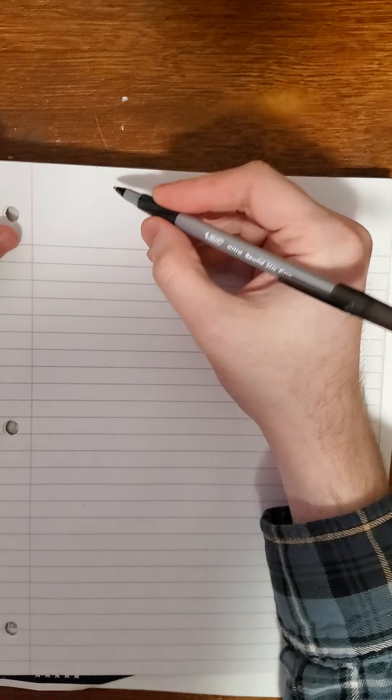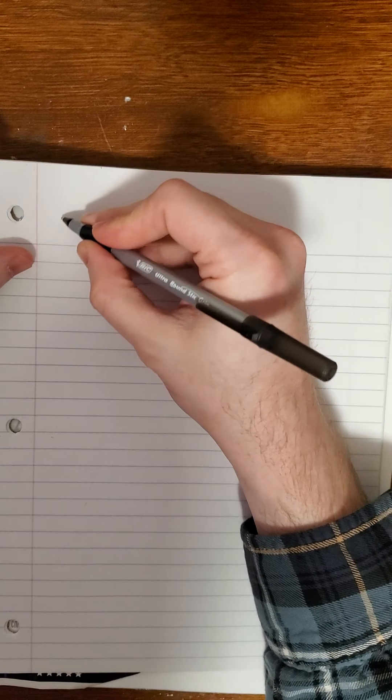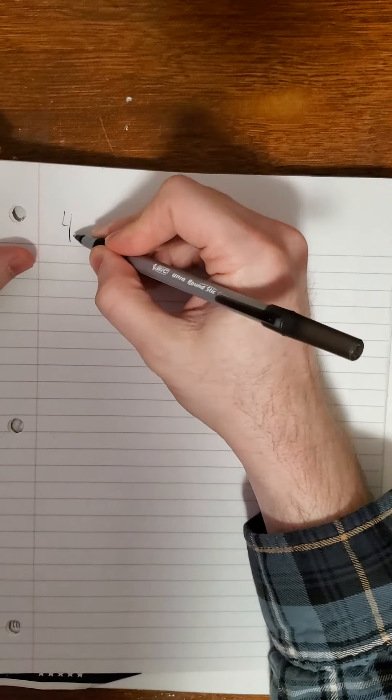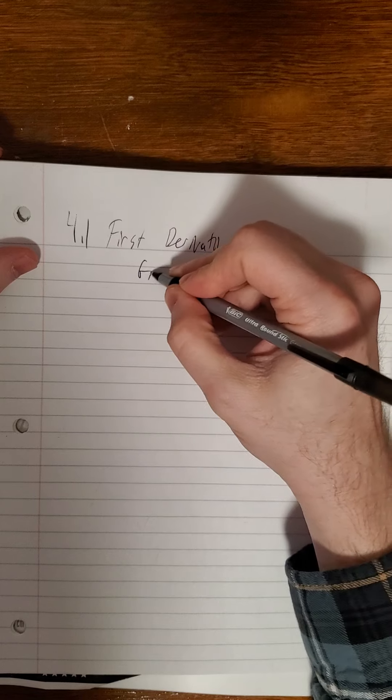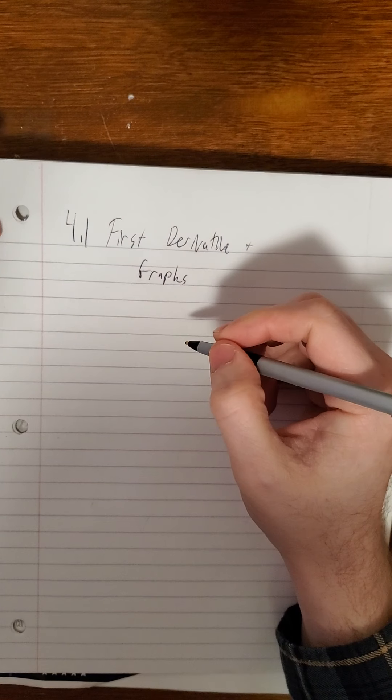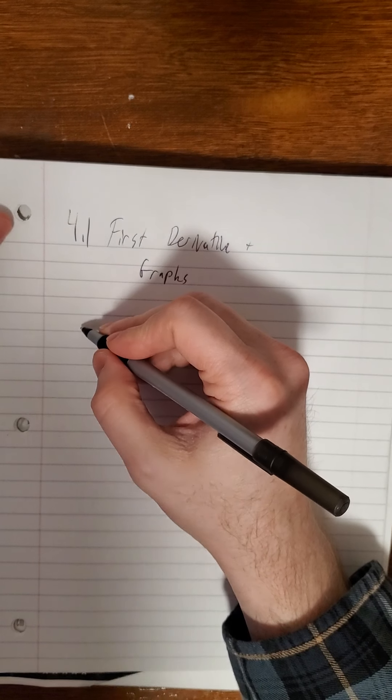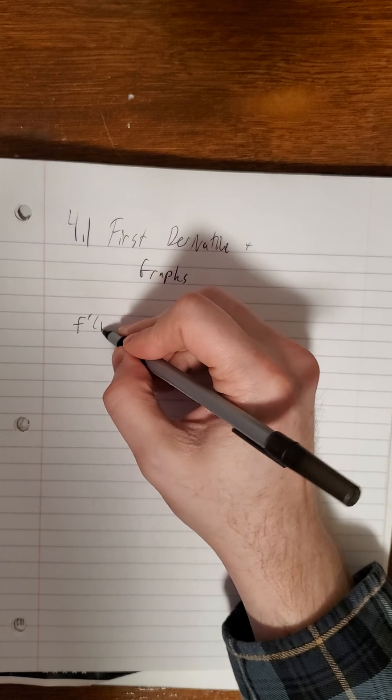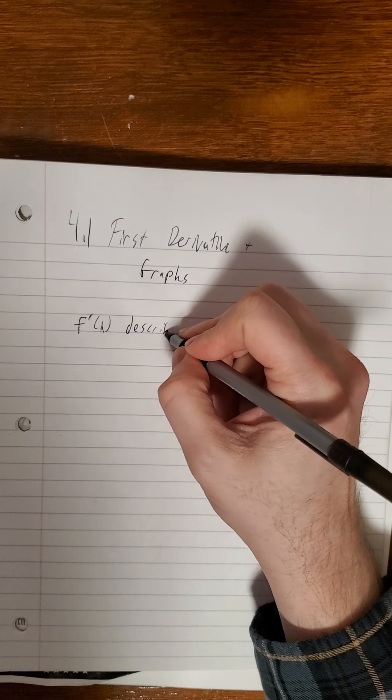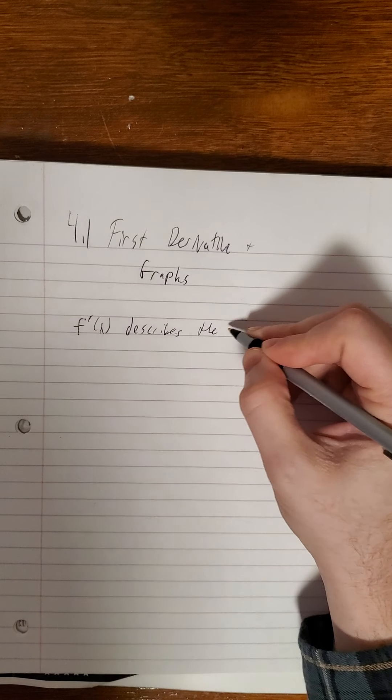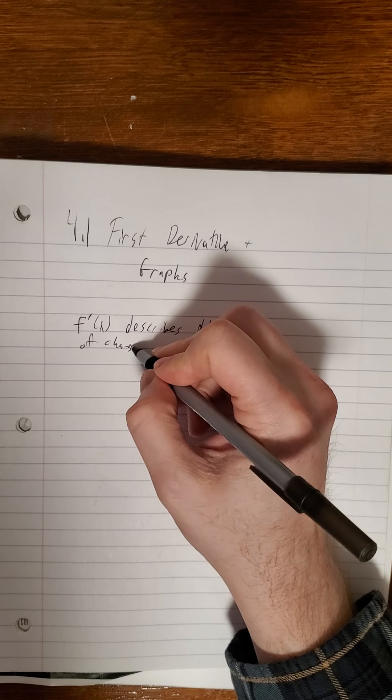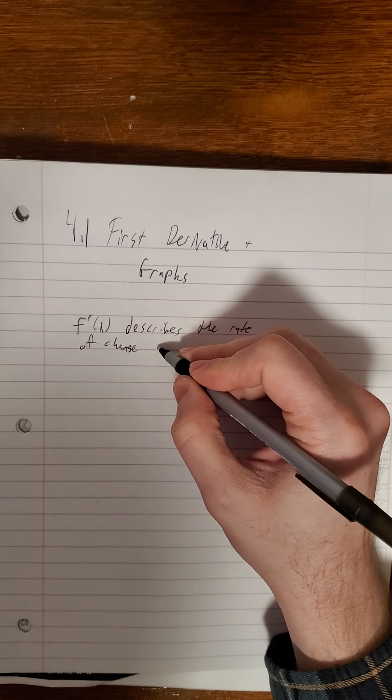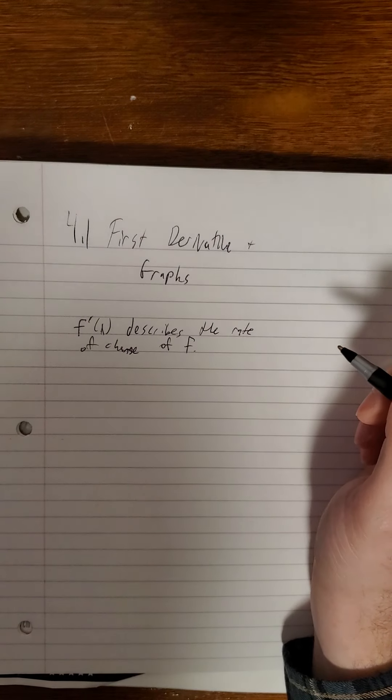Hello and welcome back in section 4.1. We get to play with the first derivatives and graphs. So remember that f prime of x describes the slope, specifically the rate of change of whatever function f is.